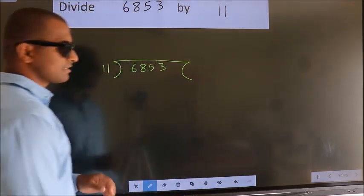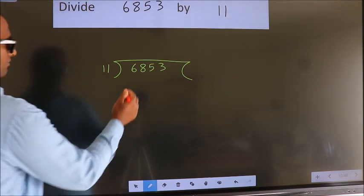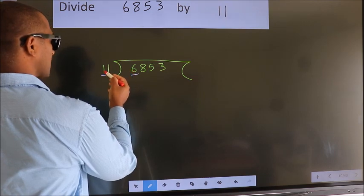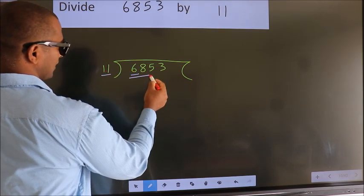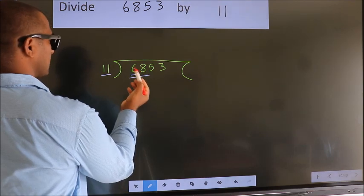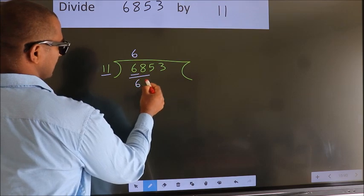This is your step 1. Next, here we have 6, here 11. 6 is smaller than 11, so we should take two numbers: 68. A number close to 68 in the 11 table is 11×6, which is 66.